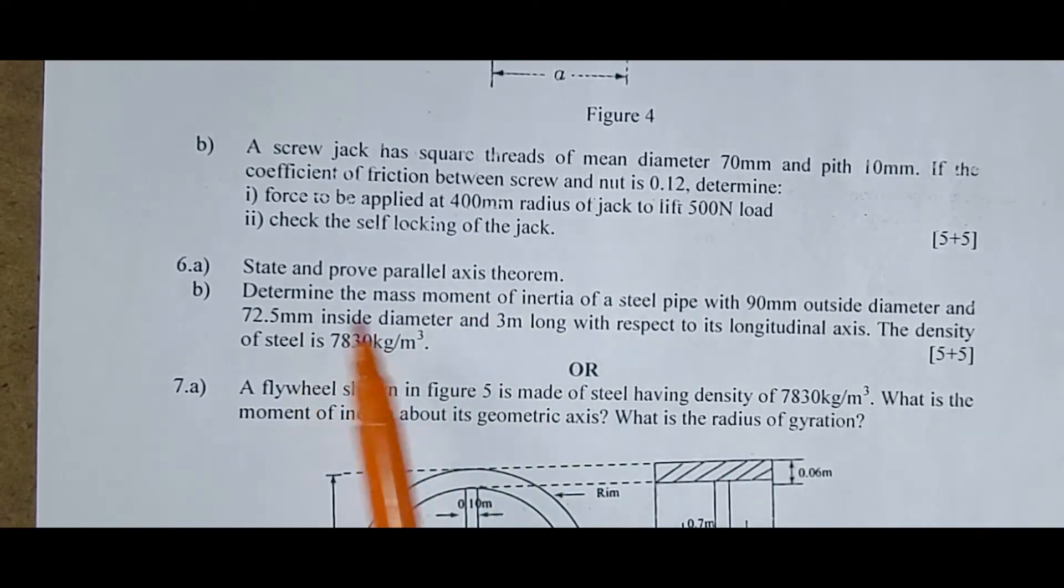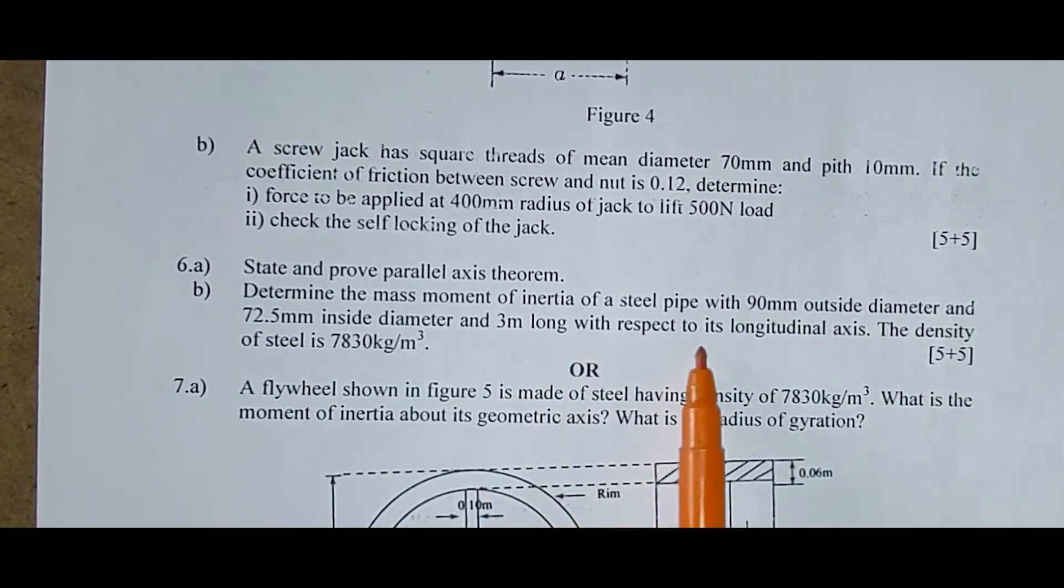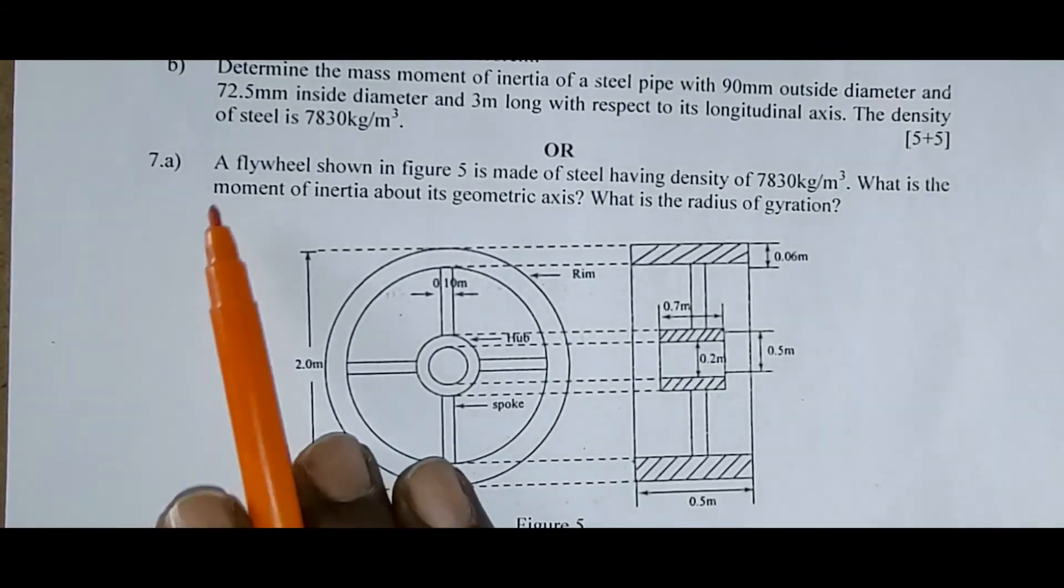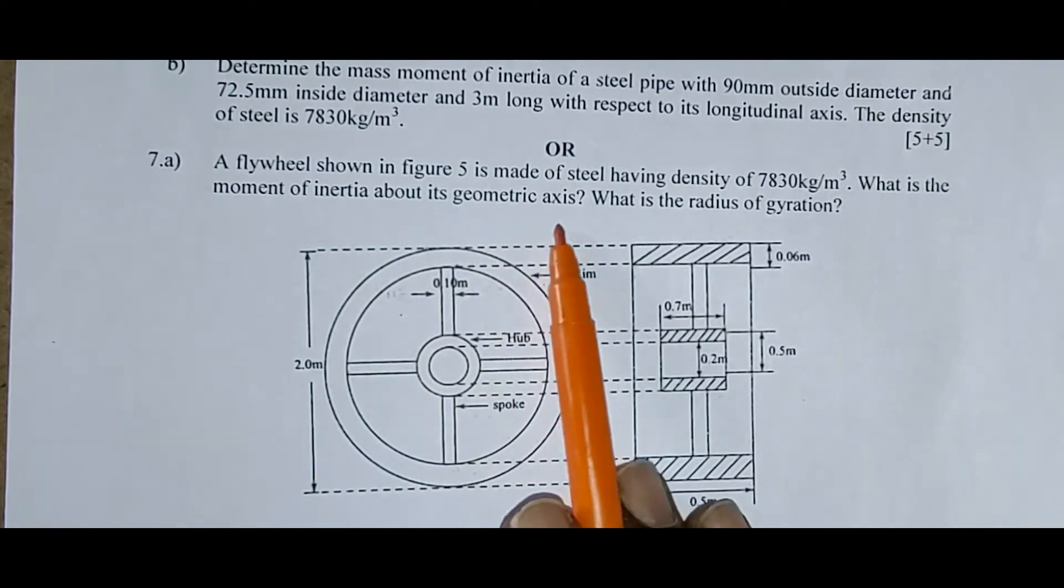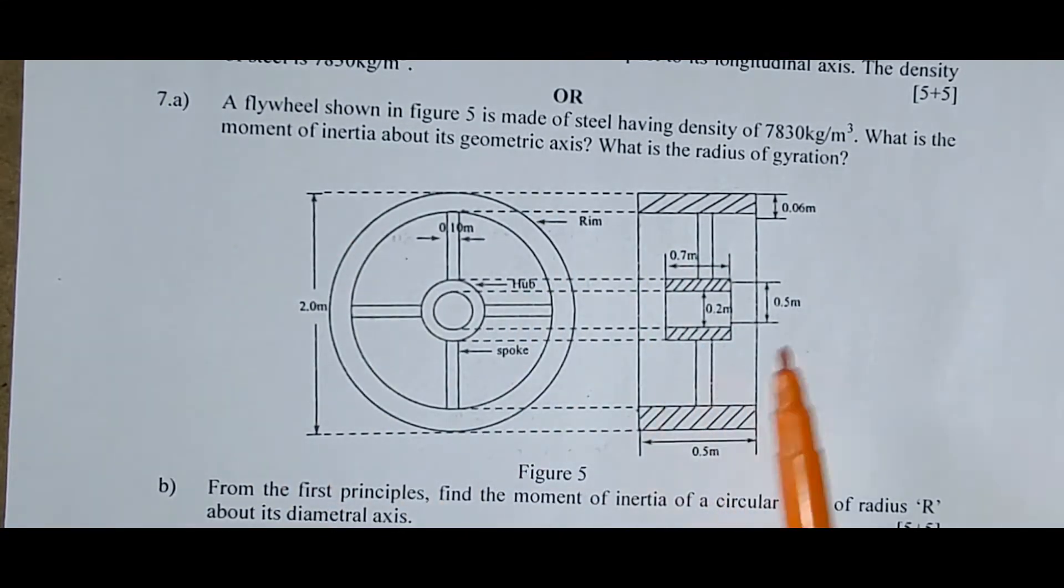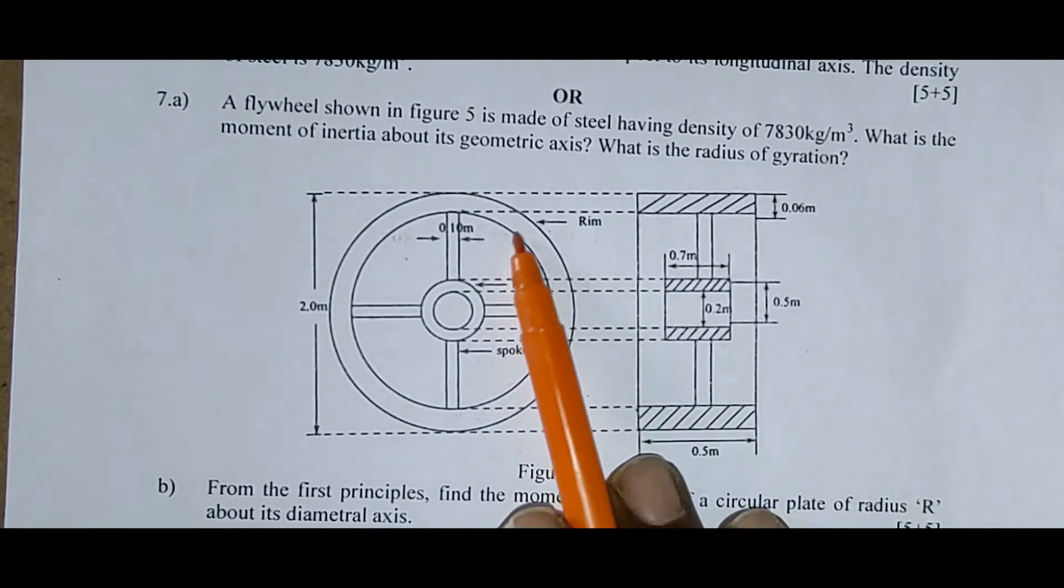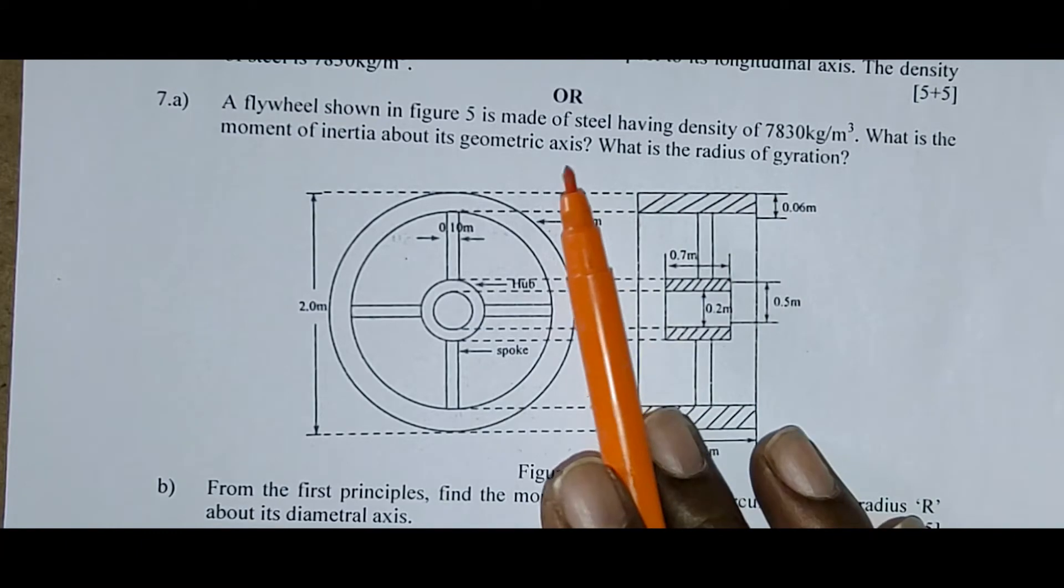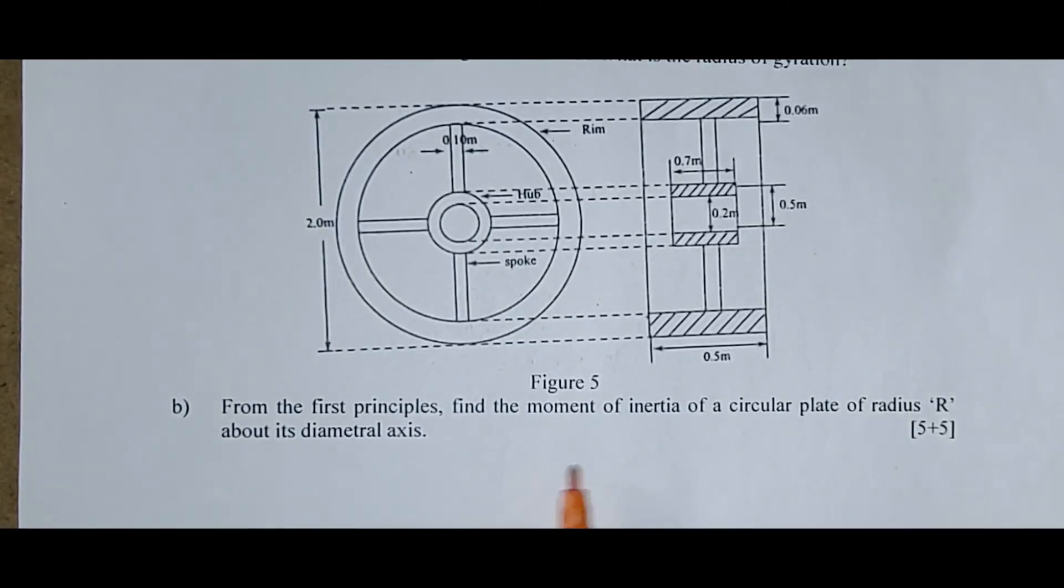State and prove parallel axis theorem. Determine the mass moment of inertia of a steel pipe with 90 mm outside diameter and 72.5 mm inside diameter and 3 meter long with respect to its longitudinal axis. The density of steel is 7830 kg per meter cube. Next question. A flywheel shown in figure is made of steel having density 7830 kg per meter cube. What is the moment of inertia about its geometric axis? What is the radius of gyration? This is the view of this flywheel. Given flywheel, you have to understand the diagram properly. This is the rim of the flywheel and this is the spoke of the flywheel. All parameters are given for this diagram. We have to find out radius of gyration and moment of inertia about its geometric axis. From the first principle, find the moment of inertia of a circular power plate of radius R about its diametral axis.